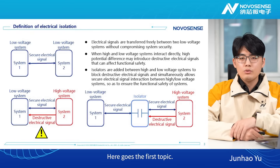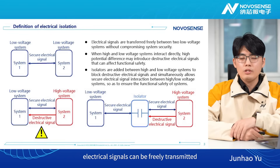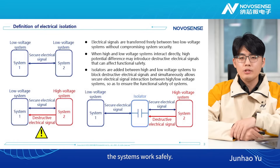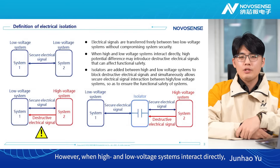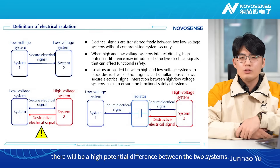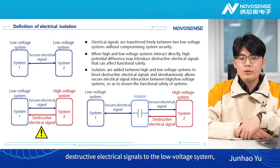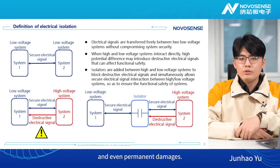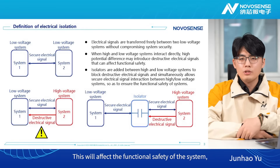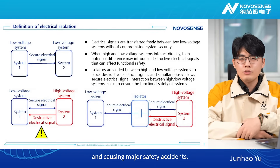Here goes the first topic. When two low-voltage systems interact, electrical signals can be freely transmitted between the two systems, and we usually assume the system works safely. However, when high- and low-voltage systems interact directly, there will be a high potential difference between the two systems. The high-voltage system may transmit destructive electrical signals to the low-voltage system, causing abnormal operating conditions and even permanent damages, affecting functional safety and endangering personal safety.